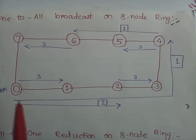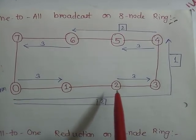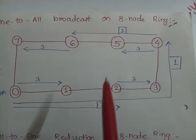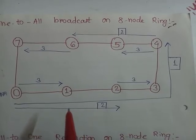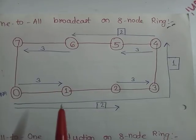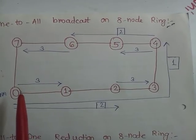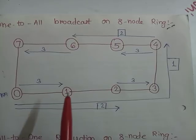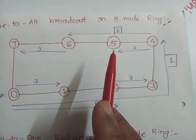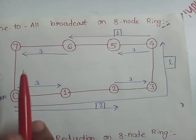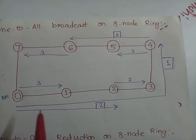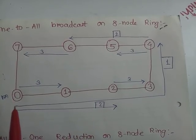So in the next step, second step, node 0 transfers message to node 2 and node 4 transfers to node 6. So in the next step we see that all nodes are having the message that was there initially at node 0. So in three steps we see that all the nodes are having the message that was there initially at node 0.